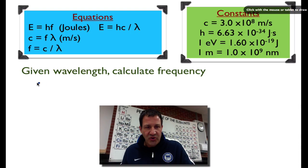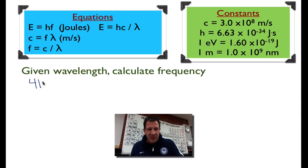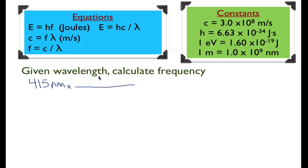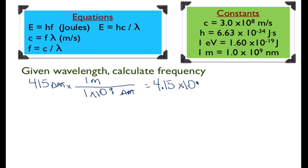Let's get started. I'm going to choose a wavelength — 415 nanometers, which is in the visible portion of the electromagnetic spectrum at the short end. That would be blue light. I'm going to convert first from nanometers to meters. Our conversion factor is 1 meter equals 1 times 10 to the 9 nanometers, giving us 4.15 times 10 to the minus 7 meters.